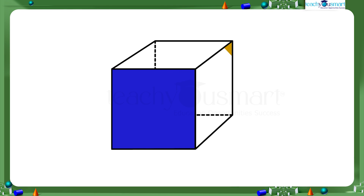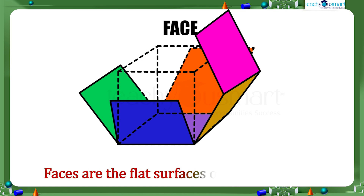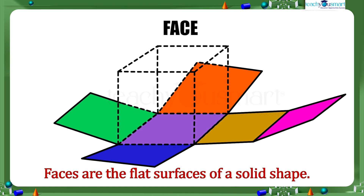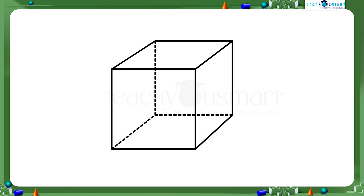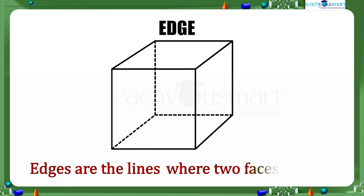In the cube, we can see some flat surfaces. These flat surfaces are called faces — that is, faces are the flat surfaces of a solid shape. When two faces meet, we get a line segment called an edge of the cube. That is, edges are the lines where two faces meet.